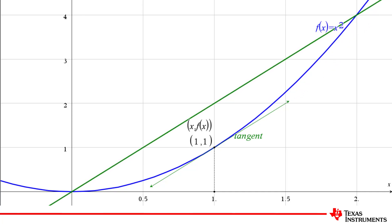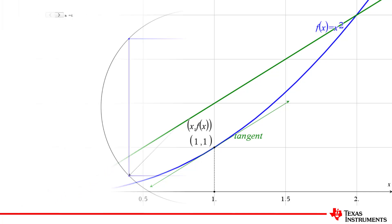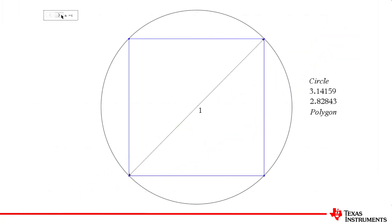Differentiation from first principles is about limits. To help understand, imagine approximating the circumference of a circle using an inscribed square. Not great, but it's a start.